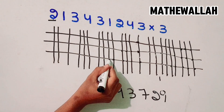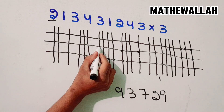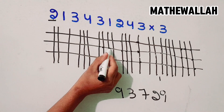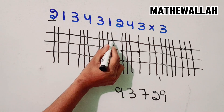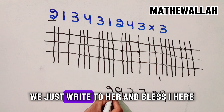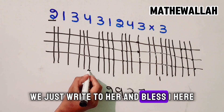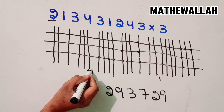Then 1, 2, 3, 4, 5, 6, 7, 8, 9, 10, 11, 12 — we just write 2 here and plus 1 here.